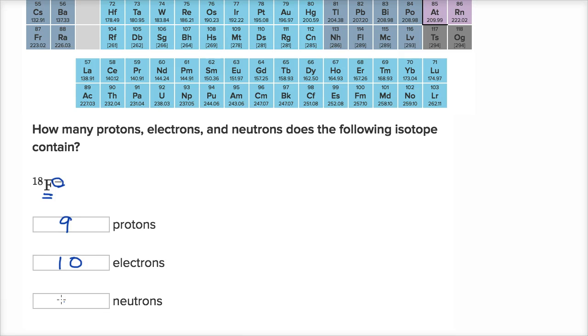And then finally, how many neutrons? Remember, the neutrons plus the protons add up to give us this mass number. So if you have nine protons, how many neutrons do you have to add to that to get to eighteen? Well, you're going to have to have nine neutrons. Nine plus nine is eighteen.